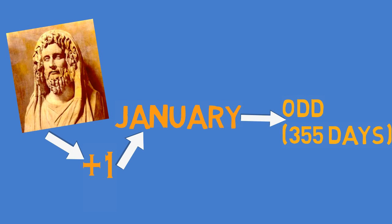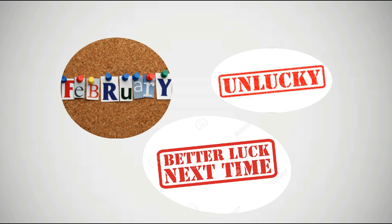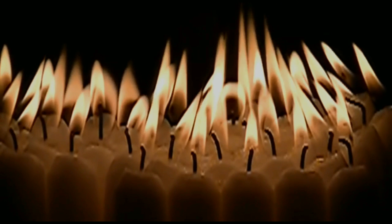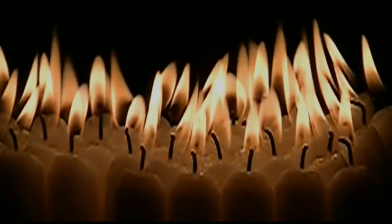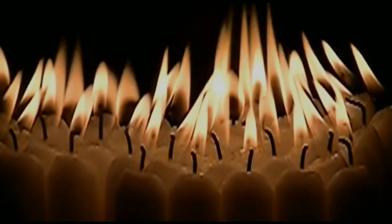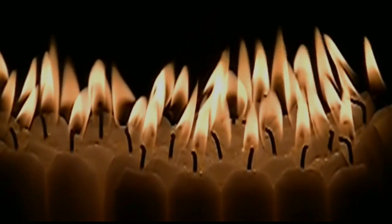But that did not sit well with Numa because even numbers were considered bad luck at the time. So Numa Pompilius added a day onto January, giving the year an odd number of 355 days. No one knows why February was left with 28 days and remained an unlucky month. It may be related to the fact that Romans honored the dead and performed rites of purification in February.